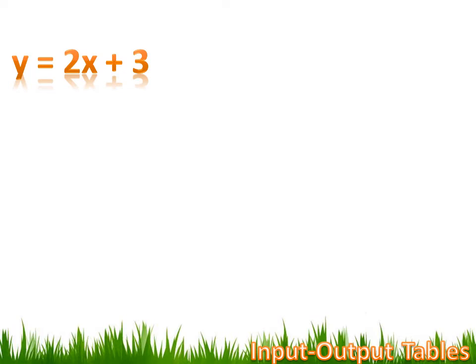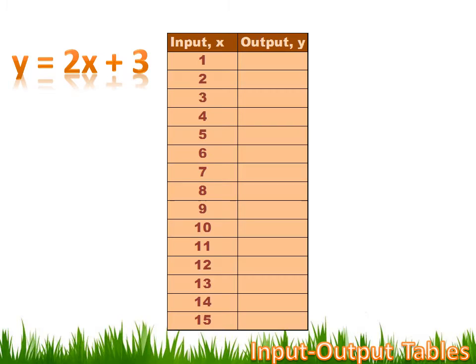Well, here's another function: Y equals 2X plus 3. Could we create an input-output table for that? Sure. That'd be easy. First, we need a table. We need a column labeled X, or input. And we need a column labeled Y, or output. Now, I just kind of arbitrarily picked the domain of the input. I picked 1 through 15. And then for each of those numbers, I'm going to substitute it into the function, in place of X, and calculate what Y equals.